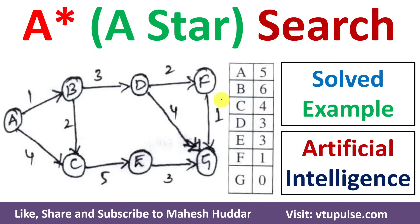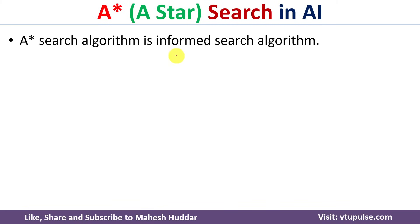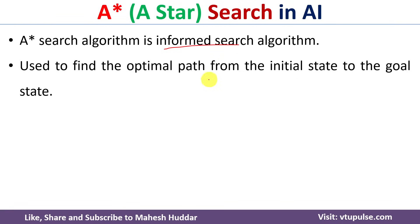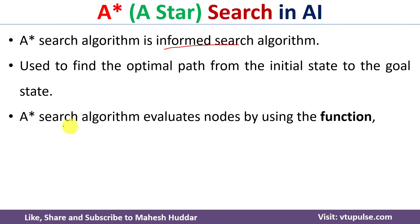Welcome back. In this video I will discuss how to find an optimal path from an initial state to the goal state using the A* search algorithm, with the help of a simple solved example. A* search algorithm is an informed search technique used to find an optimal path from the initial state to the goal state.